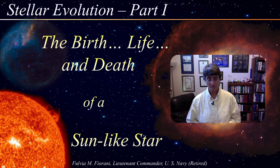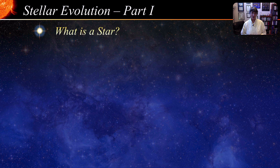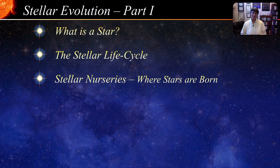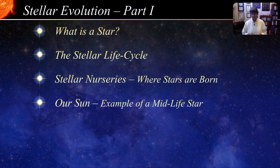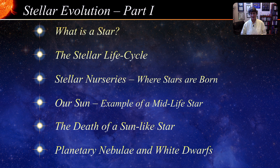In today's lecture, we will talk about the birth of stars in general, how they live their lives by fusing lighter elements into heavier ones, and finally, we will see the death process of a sun-like star. We'll start by answering what a star is, briefly cover the stellar life cycle, see how and where stars are born with beautiful Hubble images, examine our sun as an average midlife star, and see how sun-like stars die — producing beautiful planetary nebulae and ending as a white dwarf.